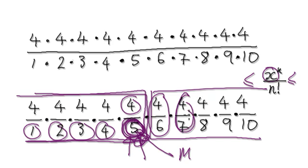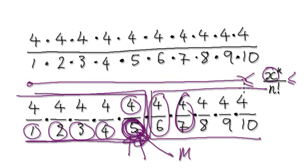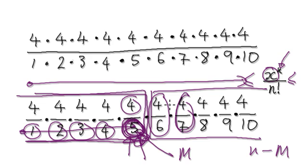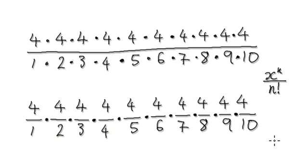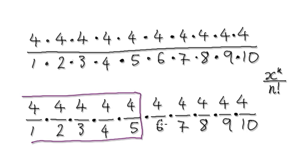So the number of terms left would be — remember there are N terms — and then we've got to take away this many terms here, which would be M. So what's left over here would be N minus M. Don't worry if you don't understand what I'm going on about. Just bear that in mind — the idea is that we're going to cut it like this.